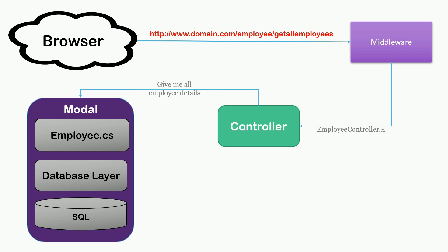The model will provide that information and return the list of employees to the controller. The responsibility of the model ends here. The controller is also a class — we just append the word 'controller' to the class name to follow the MVC pattern as per the .NET Core framework. For employee, you name it EmployeeController. If you want to create a class for home, you name it HomeController, etc.